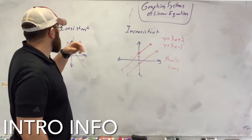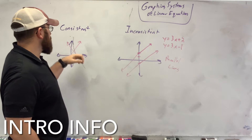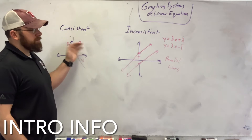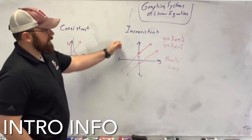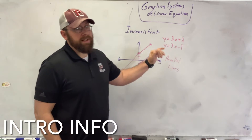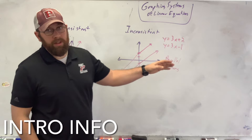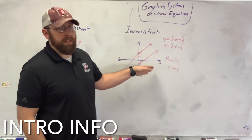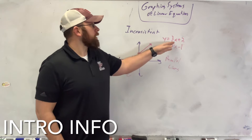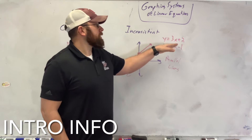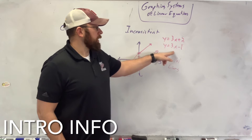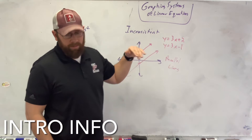Consistent equations are equations that have at least one point in common — they can have multiple. Inconsistent equations are parallel lines because they will never touch or cross. You'll never get an answer for this, so whenever you have a system of linear equations that are parallel lines, they will never ever touch.